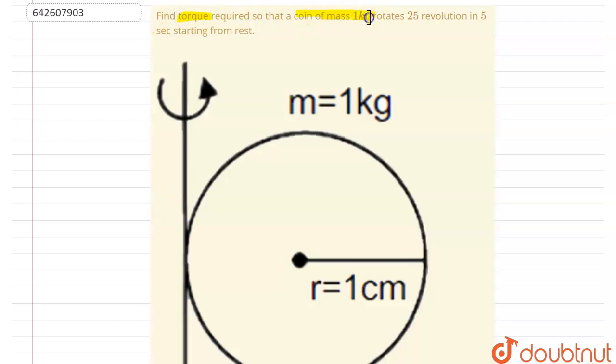so that a coin of mass 1 kg rotates 25 revolutions in 5 seconds starting from rest. You can see the diagram here. We have to find out the torque, so let us first find out the alpha required